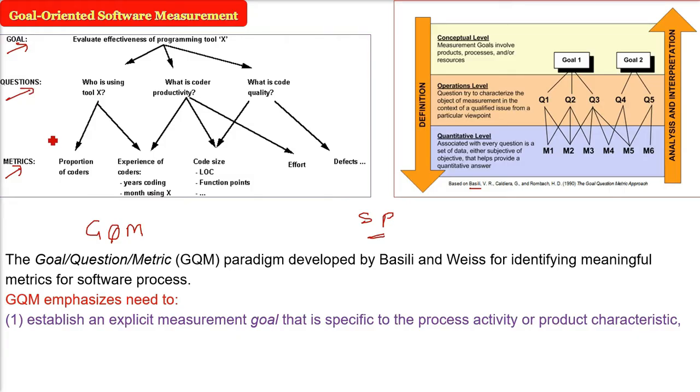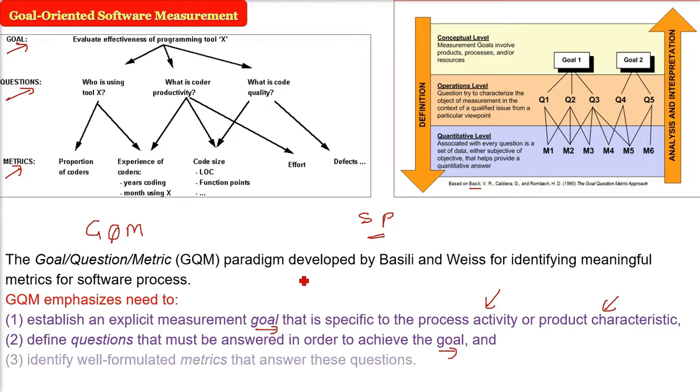Now, this GQM is emphasizing what is your goal? What is your explicit measurement goal that is specific to a process activity or a product characteristic? Then we will define certain questions that need to be answered in order to achieve the goal, the measurement goal.